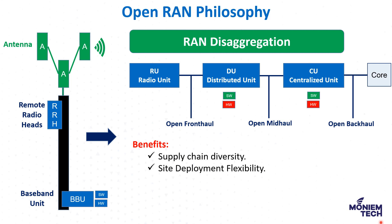The second benefit is site deployment flexibility. Based on the solution or deployment you need, you can select the best place to host the DU and CU based on latency or throughput requirements — in a datacenter, an edge datacenter, or even at the site itself. The third benefit is reduced operator dedicated hardware cost, meaning software can run on any commercial off-the-shelf hardware, not purpose-built hardware.